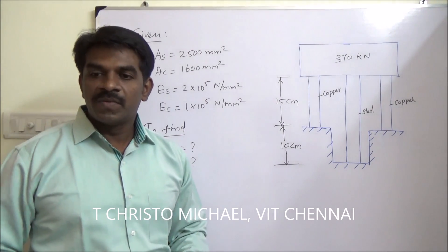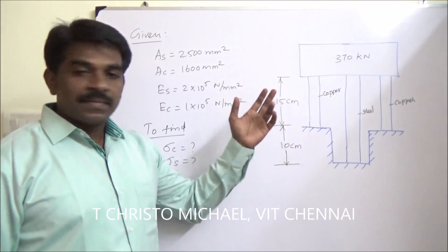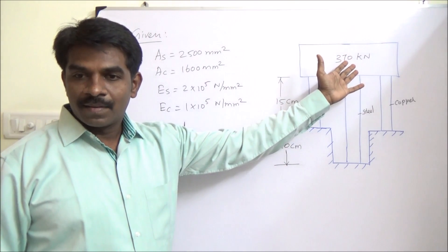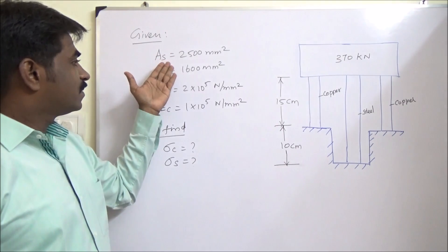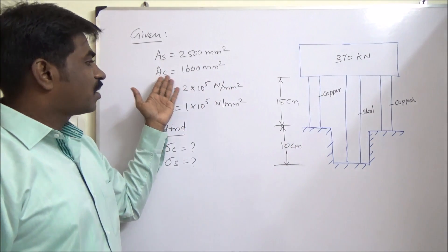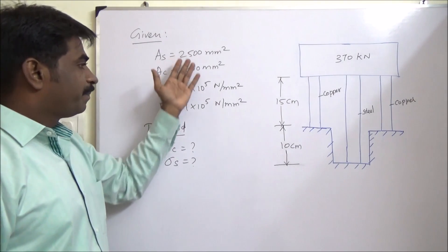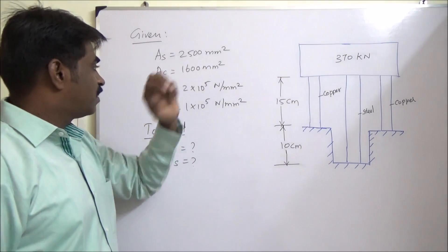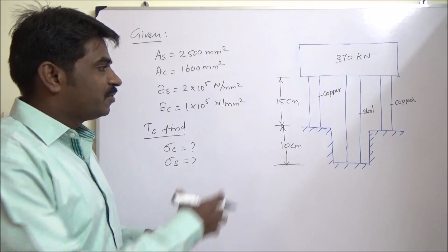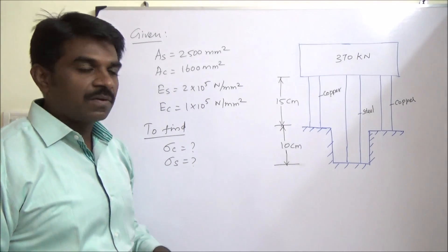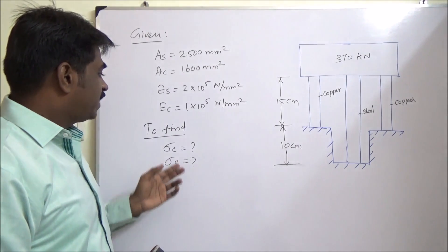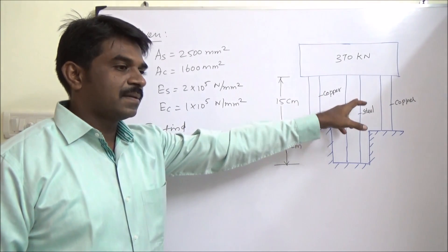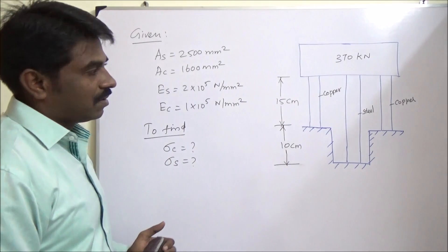Let us solve this problem. A steel rod and two copper rods support this load. The cross sectional areas for steel rod and copper rods are given. For each copper rod, the cross sectional area is 1600 mm square. The corresponding Young's modulus values for the two materials are also given. We have to find sigma C and sigma S, the stresses in copper and stress induced in steel rod.